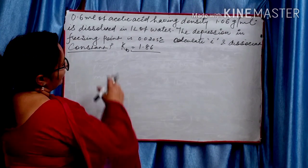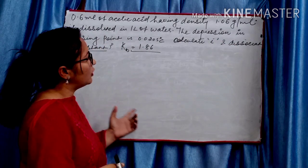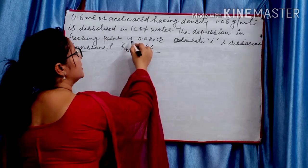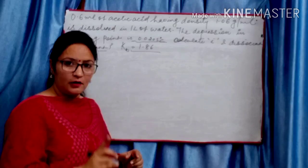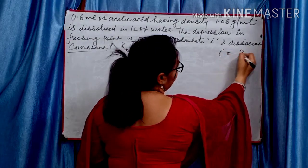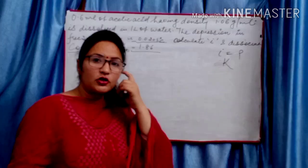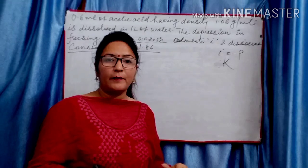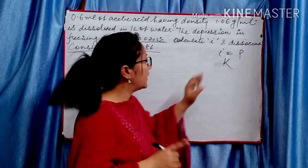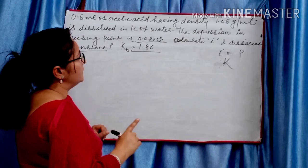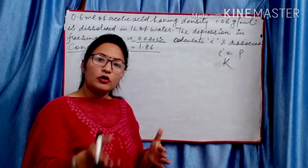Fifth numerical: 0.6 mL of acetic acid having density 1.06 g/mL is dissolved in 1 liter of water. Depression in freezing point is given. Calculate i (Van't Hoff factor) and dissociation constant Ka. First find i. Density formula: density = mass/volume, so mass WB = 1.06 × 0.6. The acetic acid is the solute here.